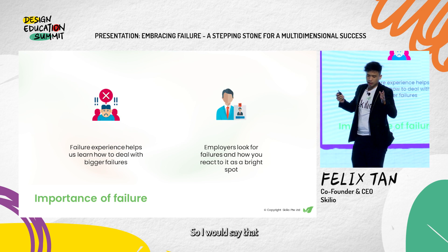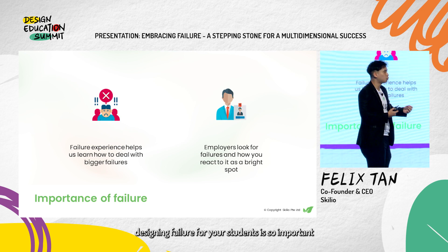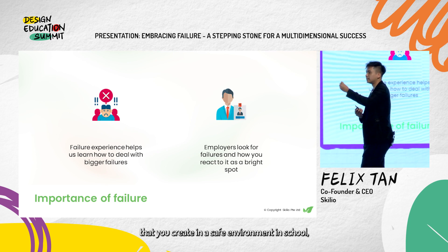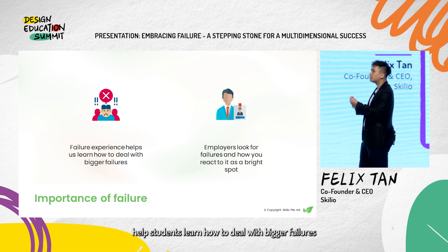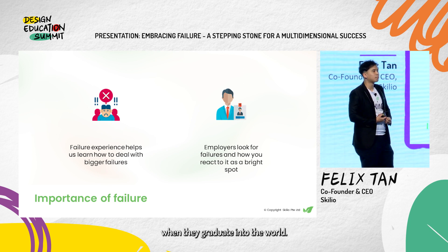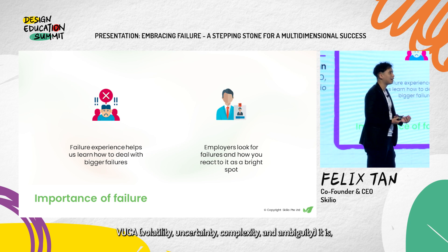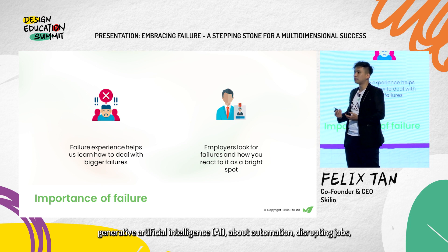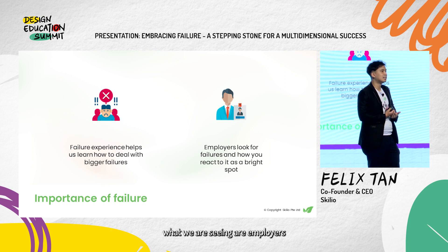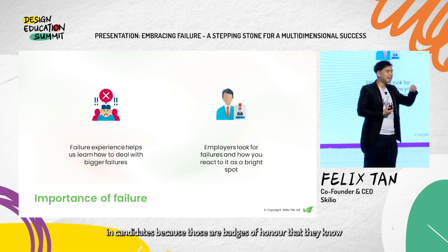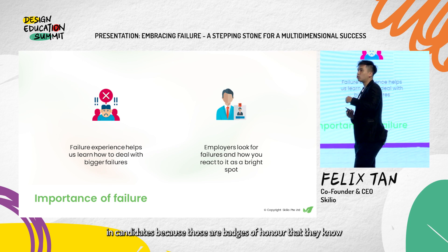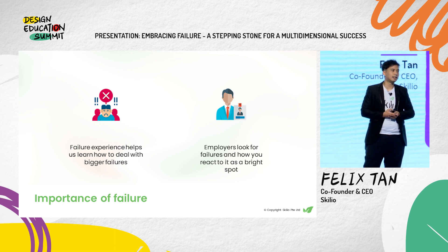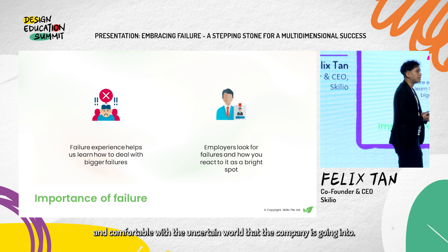Designing failure for your students is so important, even for the future — because these failure experiences created in a safe school environment help students learn how to deal with bigger failures when they graduate into the world. When we talk about how VUCA the future is, about generative AI, about automation disrupting jobs, what we are seeing is employers actually looking out for failure experiences in candidates, because those are badges of honor — signals that the talent will be resilient, confident, and comfortable with the uncertain world the company is going into.